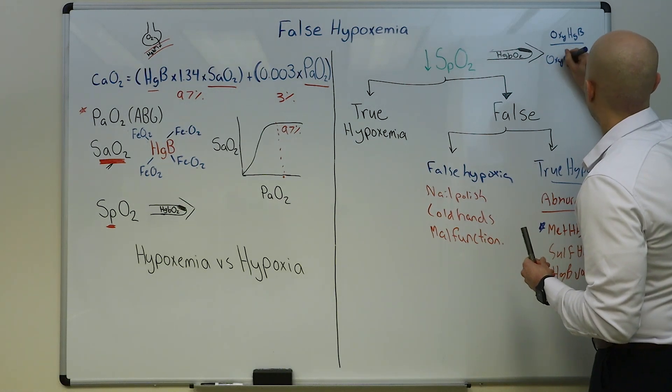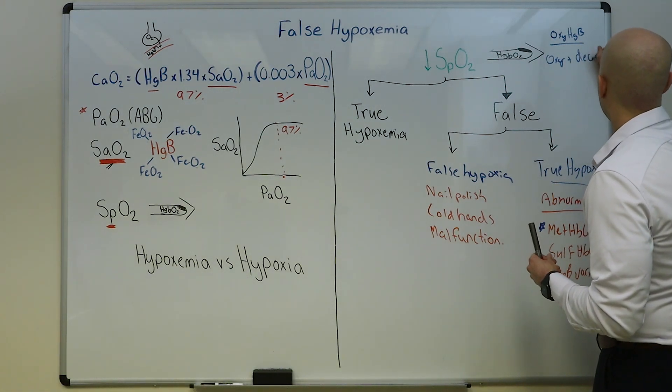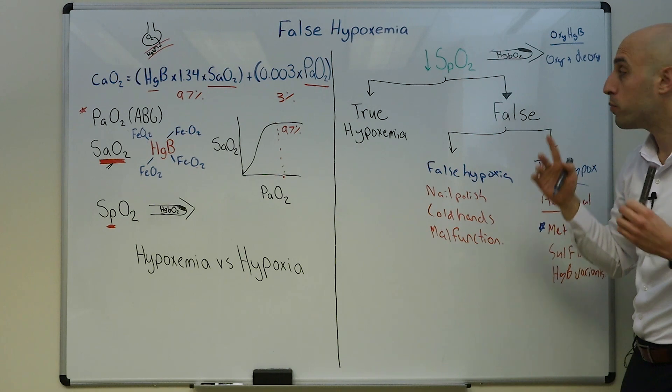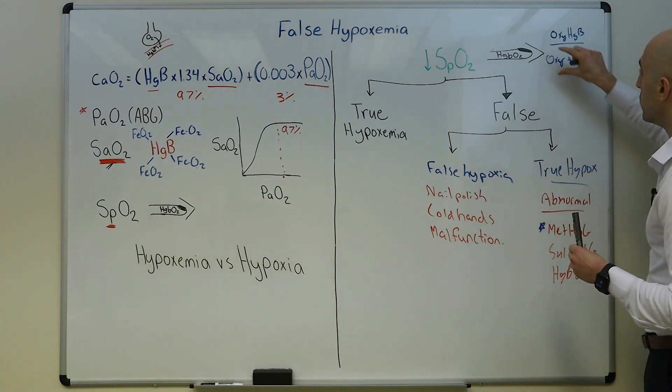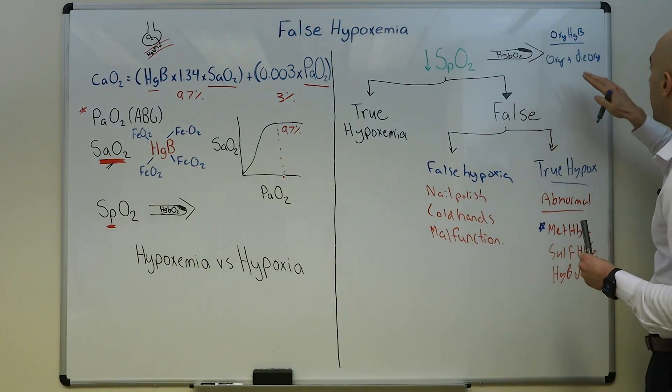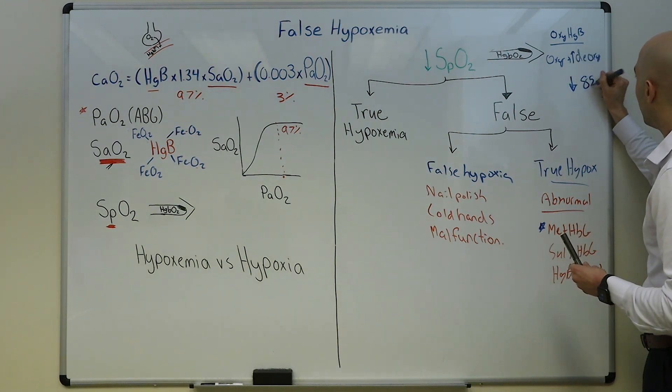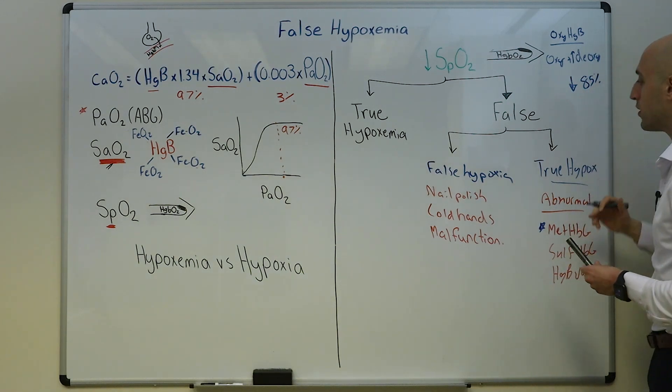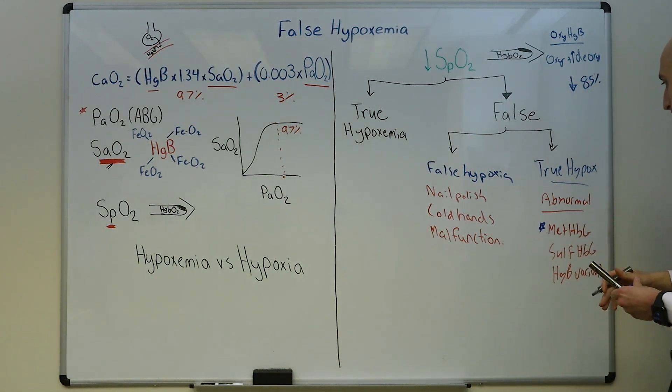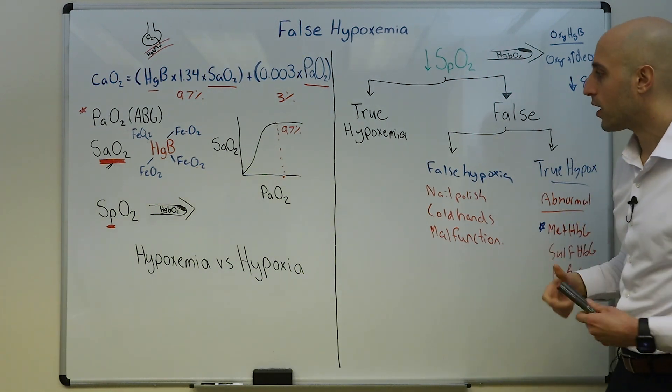So if the pulse ox is giving you an SpO2 based on oxyhemoglobin over oxy plus deoxyhemoglobin, methemoglobin absorbs light like deoxyhemoglobin, so the pulse ox, if you have more deoxy, it's going to come up with a low value, let's say 85 percent. In fact, methemoglobinemia never causes it to go below 85 percent.